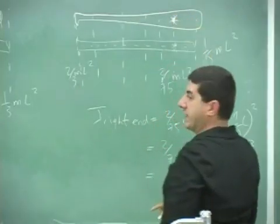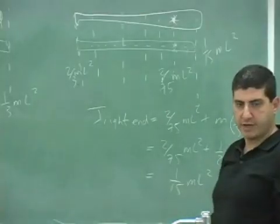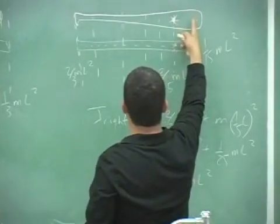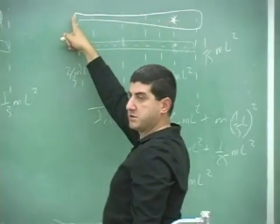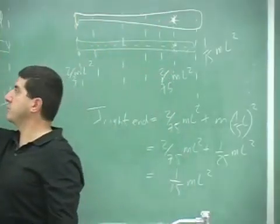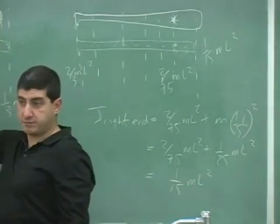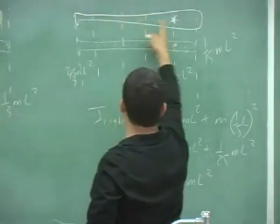What I'm saying is it's harder to swing the baseball bat around the left end here than it is to swing a regular ruler around the left end, even if the masses are the same. You see, because here the distribution of the mass is massier.